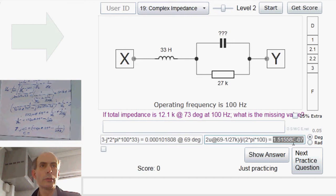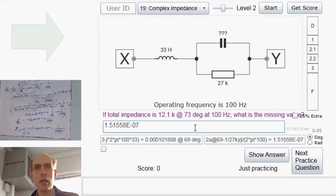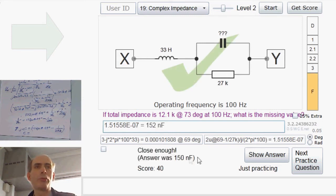1.5 times 10 to the minus 7, which is probably going to be 150 nanofarads. Yep. Spot on. Great. It might look a bit daunting, but actually provided you keep your head straight and deal with everything as complex numbers, the formulas are just the same as the ones we were using last term with real resistances.